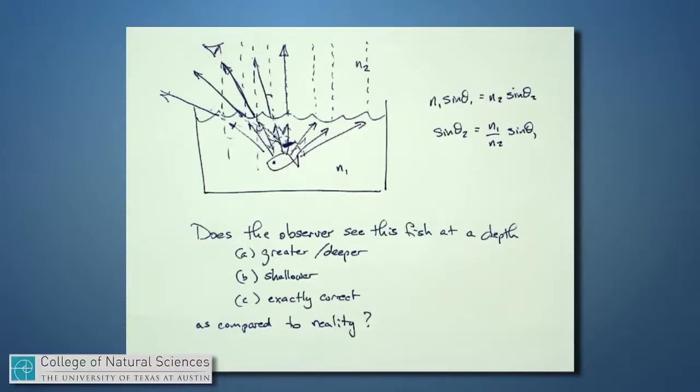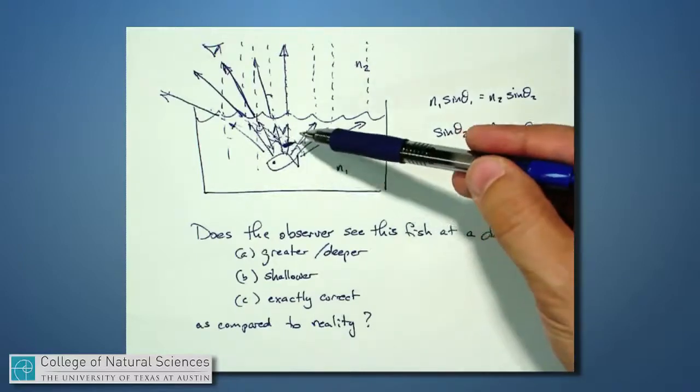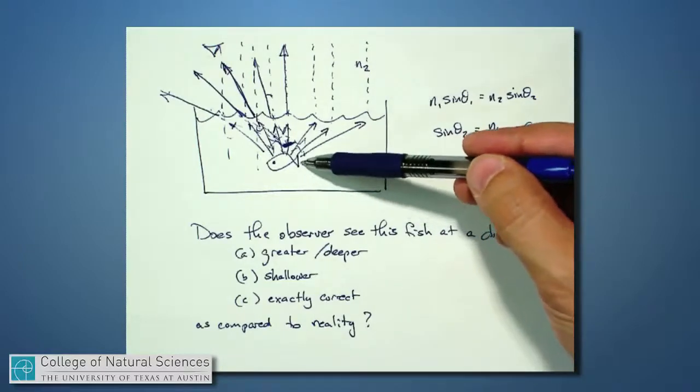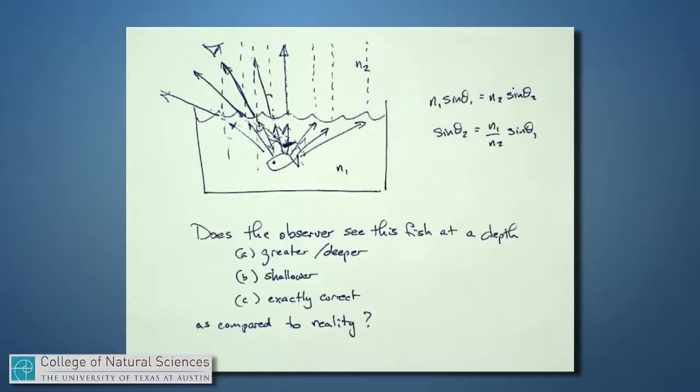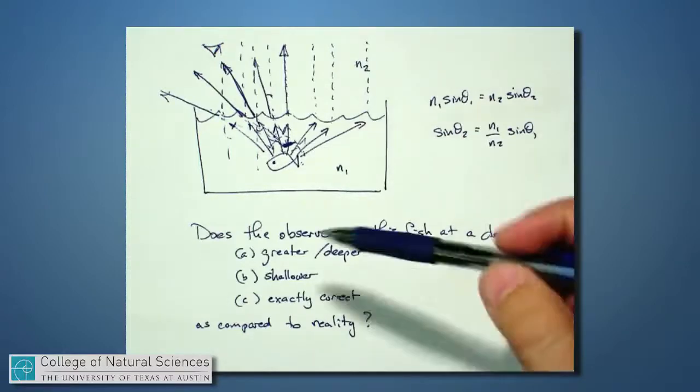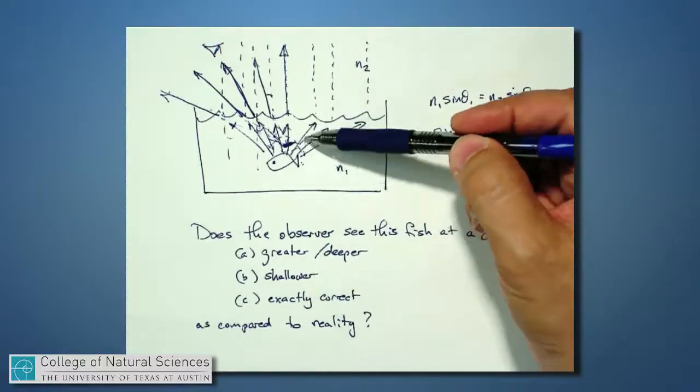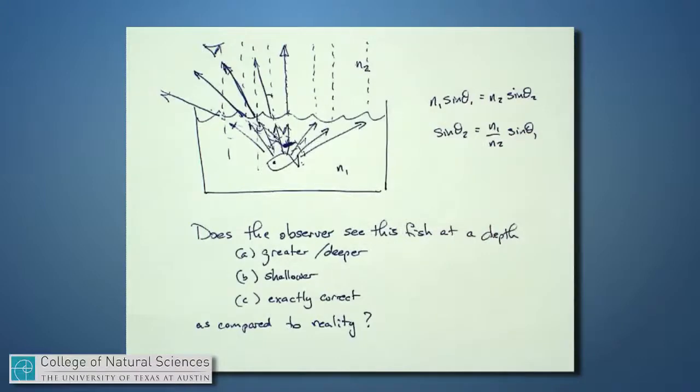This gets us into the territory where we start considering images in the presence of refraction. The image distance in this case is not equal to the object distance. The object distance is how far the object is away from the boundary; the image distance is how far the image is away from the boundary. As a result of the light refracting through this boundary, we think the image is someplace else than where the object is.